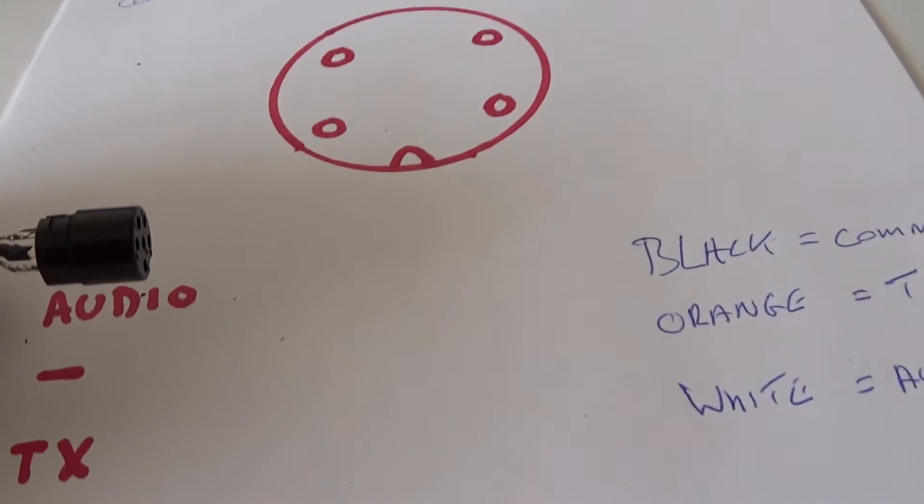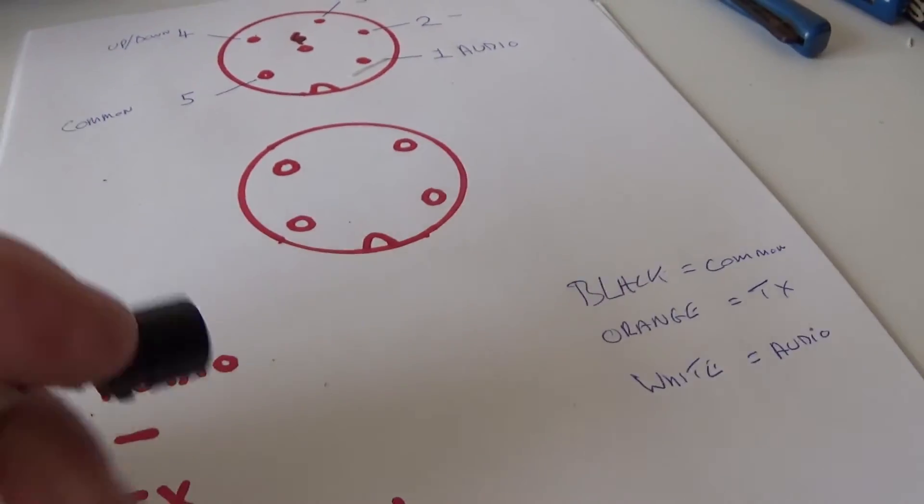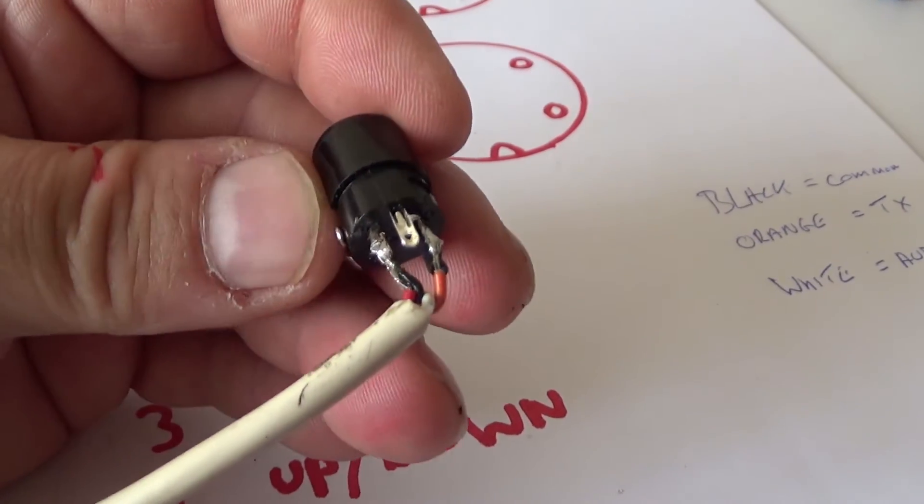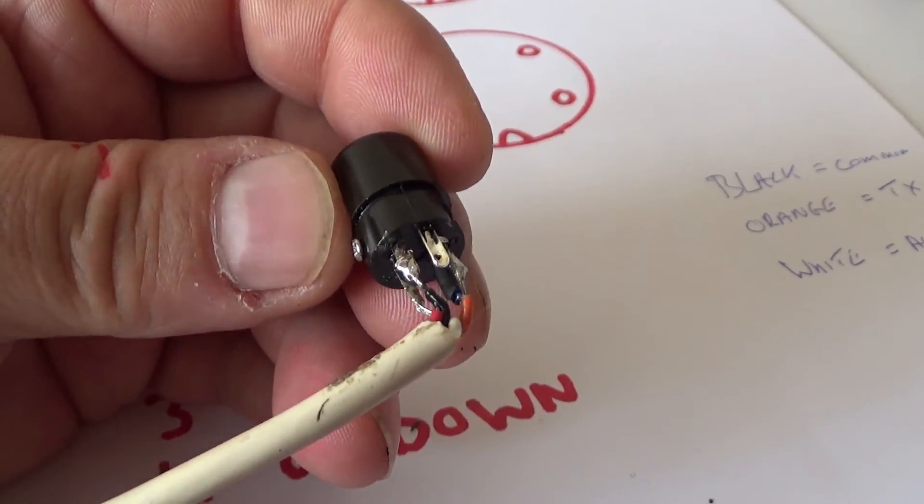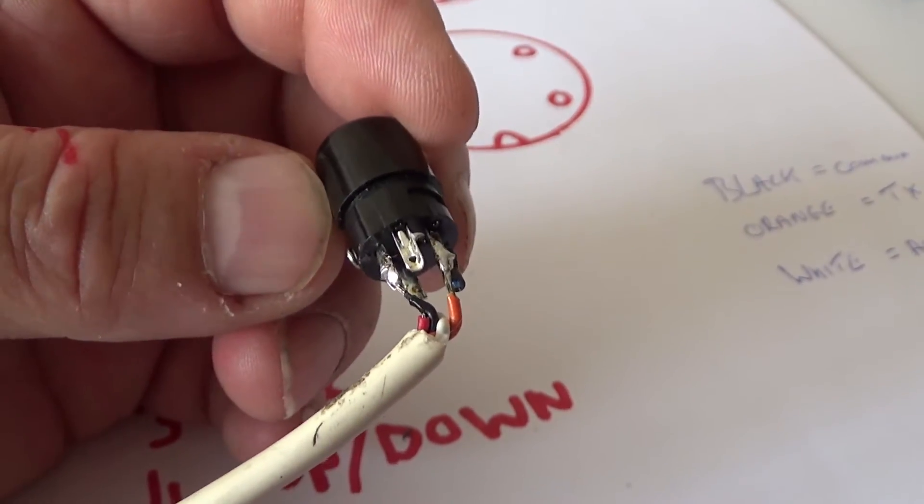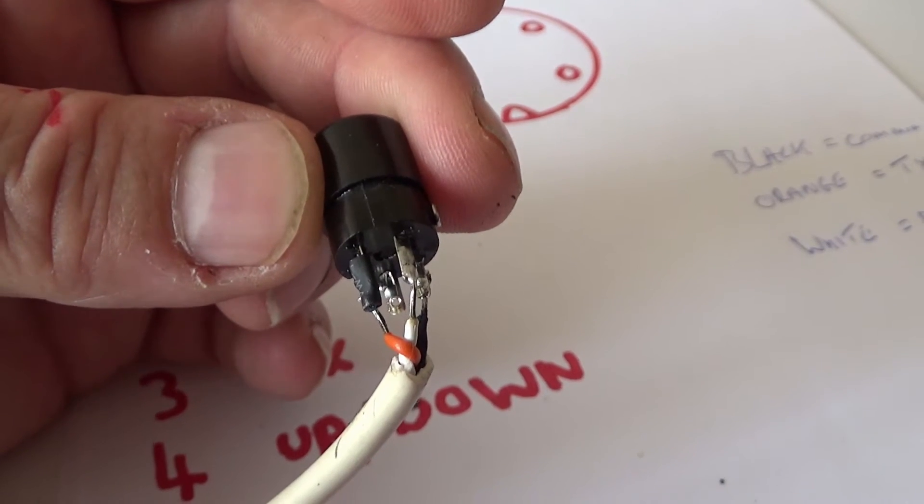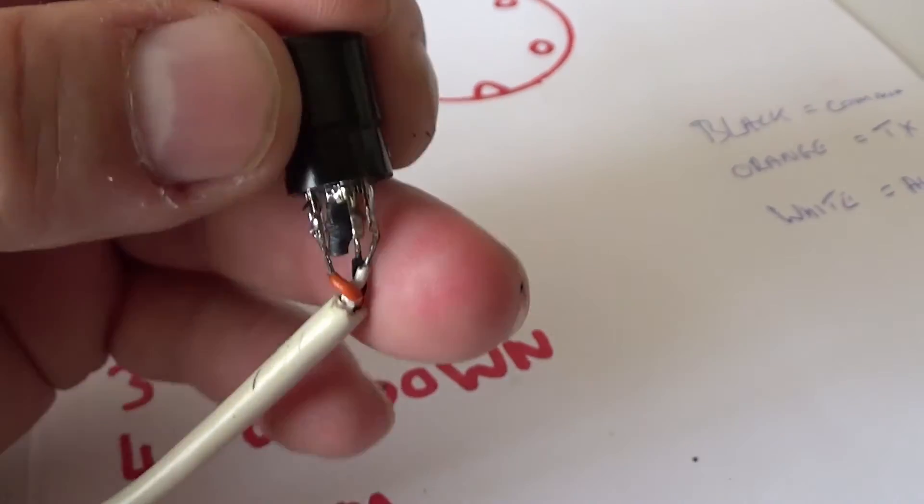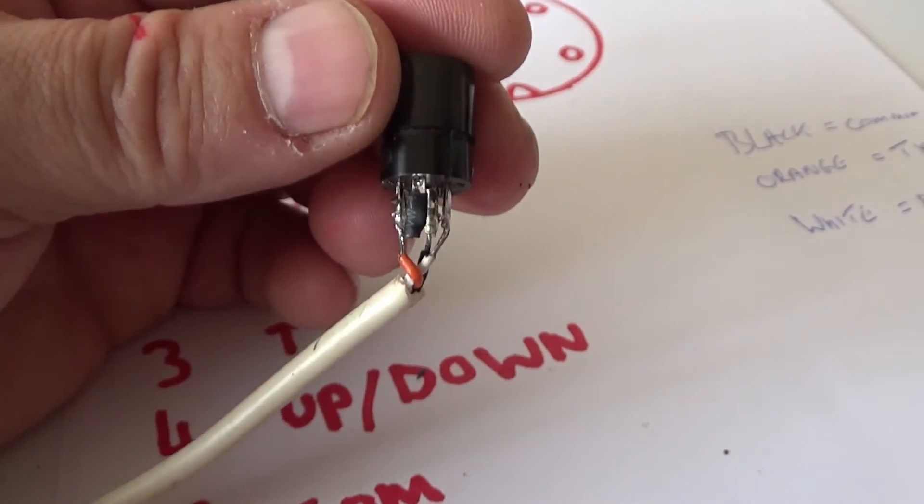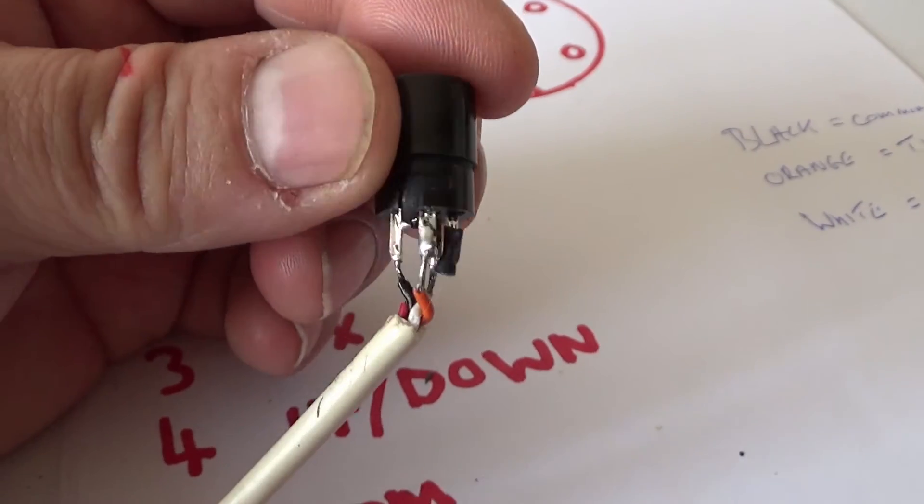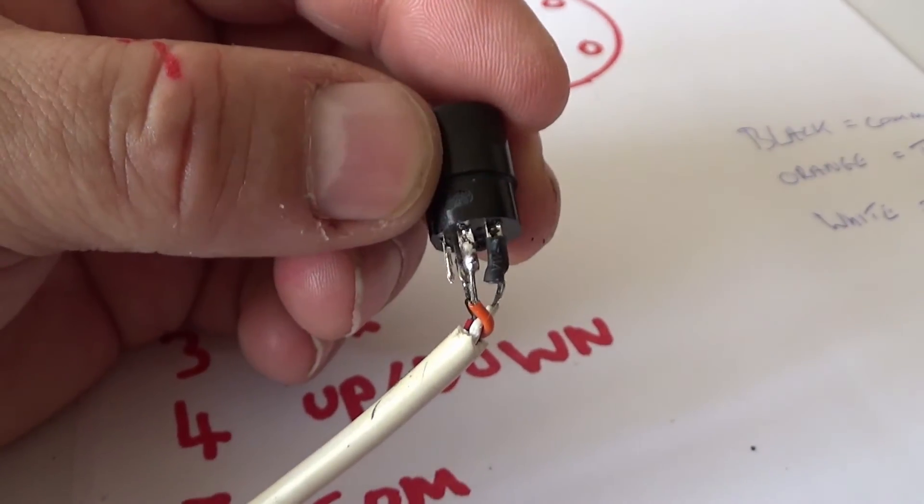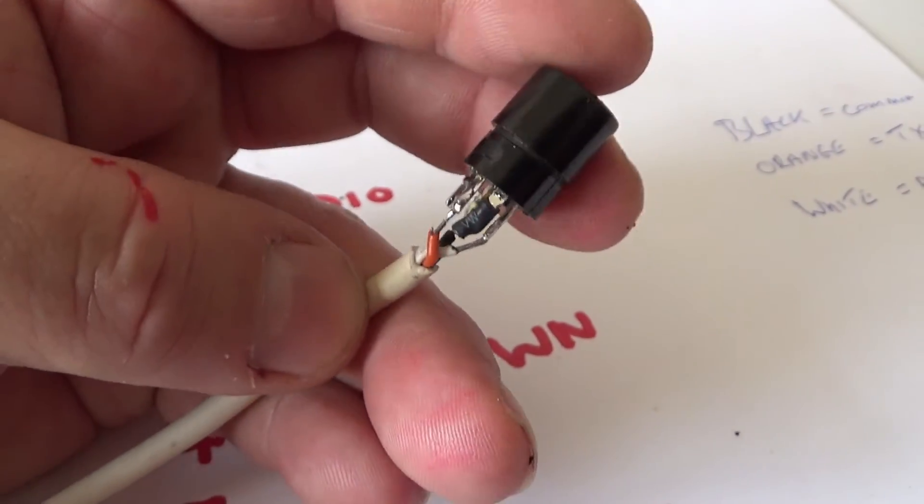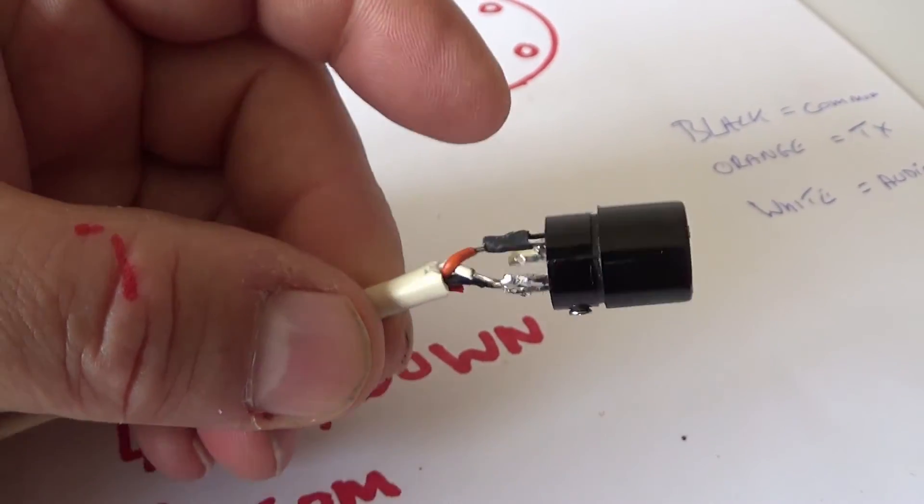So you've got, in particular for the 9900, you found your TX wire, you found your common, you only need the audio now. You will have to play about with that. Sometimes just using pure logic will tell you. For example, if I did a check on this one, I can quickly work out what one's common, what one's the TX, the other wire has got to be audio.